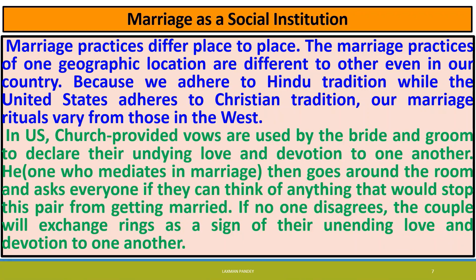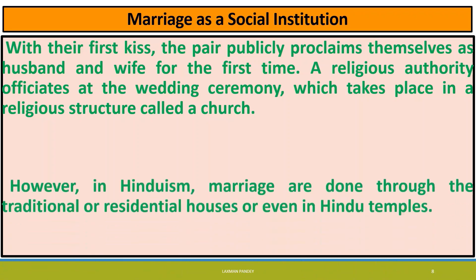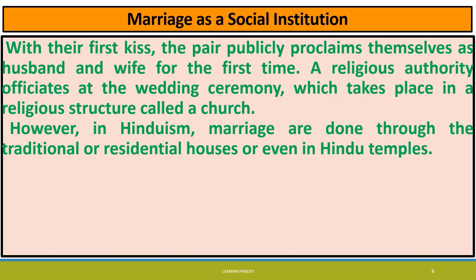In Western weddings, church-provided vows are used by the bride and groom to declare their undying love and devotion to one another. The officiant then asks everyone if they can think of anything that would stop the couple from getting married. If no one disagrees, the couple will exchange rings as a sign of their unending love and devotion. With their first kiss, the pair publicly proclaims themselves as husband and wife. A religious authority officiates at the wedding ceremony which takes place in a church. However, in Hinduism, marriages are done through tradition in residential houses or even in Hindu temples.